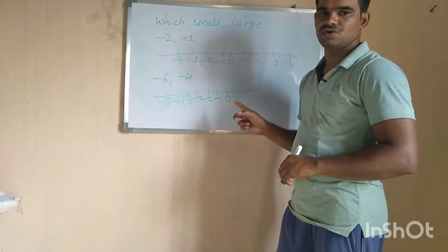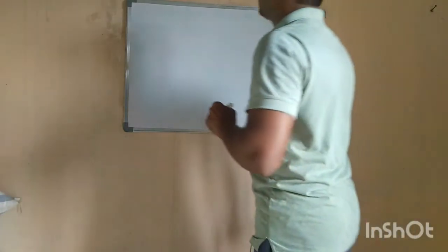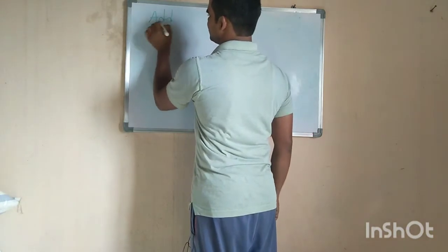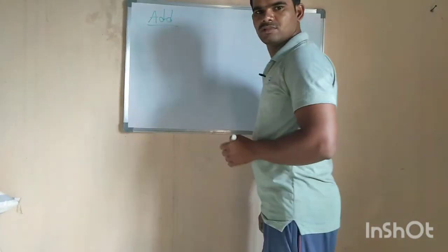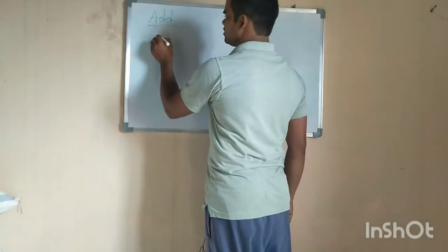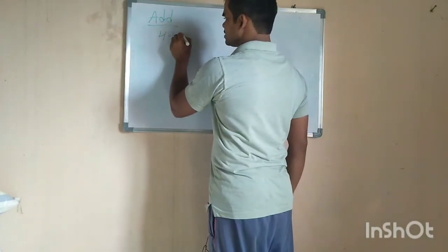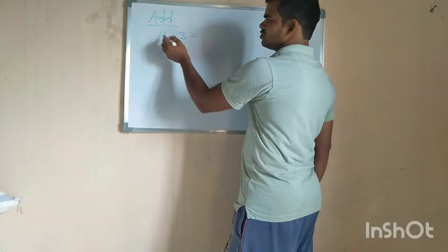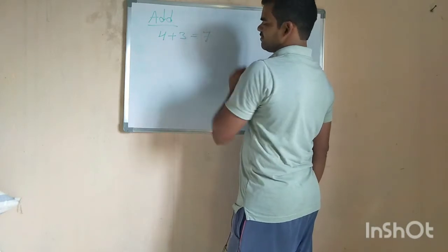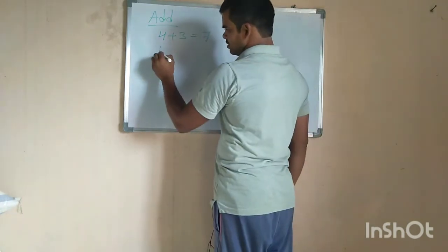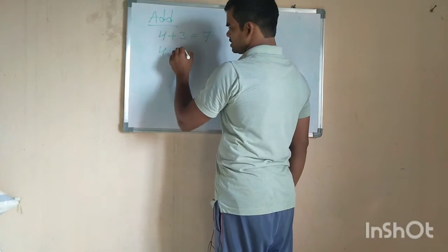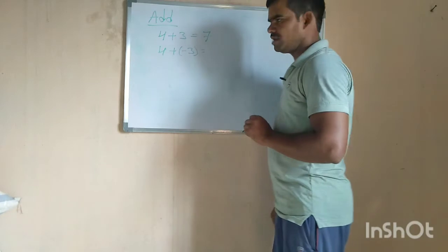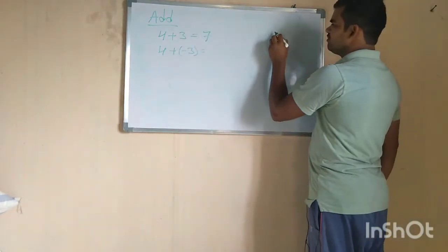Now we are going to add integers without using the number line. 4 plus 3 — these two are also integers — so 4 plus 3 is simply 7. Now consider 4 plus minus 3.